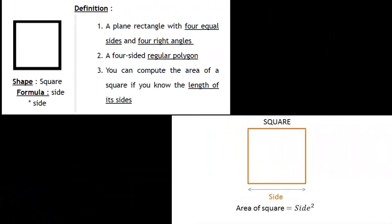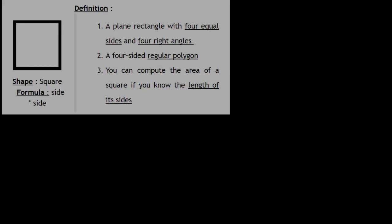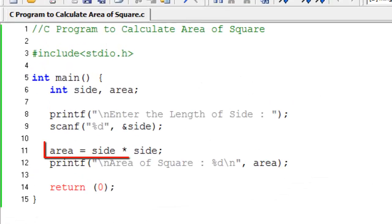Some points about square. A plain rectangle with four equal sides and four right angles. A four-sided regular polygon. You can compute the area of a square if you know the length of its sides. Formula to calculate area of square: Area equals side squared.